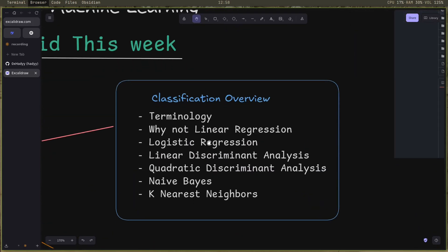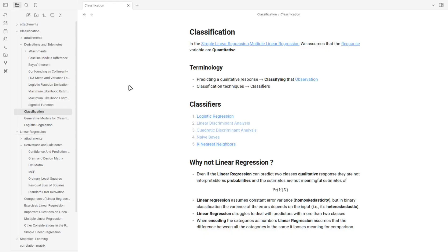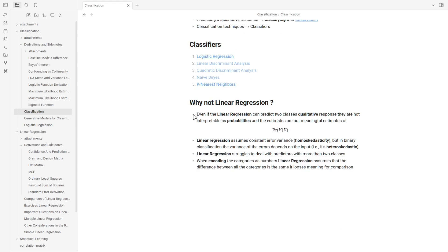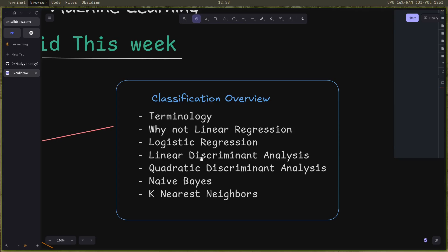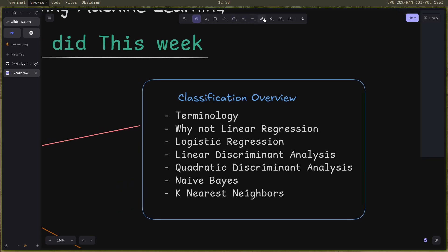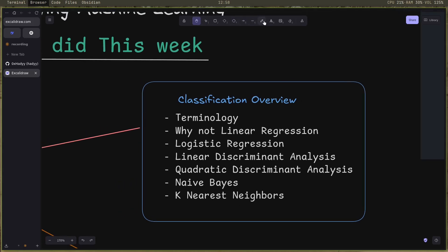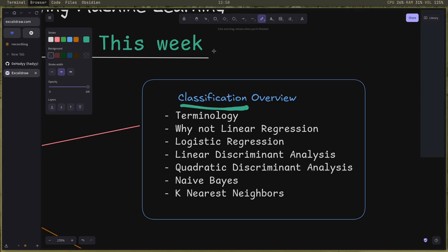I had an overview of the chapter and the things I'm going to study. I started by getting to know the terminology and why not use the linear regression solution on these kind of problems. The alternative better solutions like logistic regression, linear discriminant analysis, quadratic discriminant analysis, naive Bayes, and K nearest neighbors, and why they fit better the classification problem.